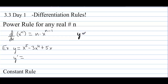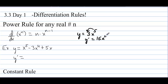For example, if we have y equals 3x to the 5th, to take the derivative we just multiply 5 times 3. So y prime, the derivative, would be 15, and then we reduce this power by 1. So 15x to the 4th, and that's all there is to it when we have a power.